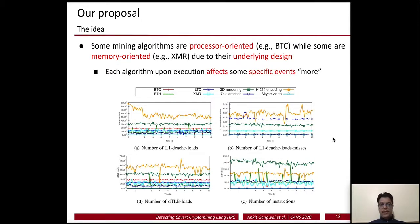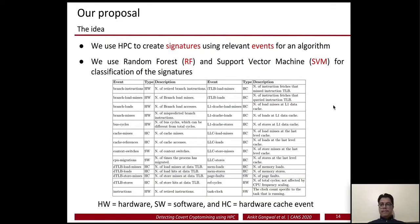When mining algorithms execute, they affect some hardware events more than others. For example, the XMR line is very consistent for L1 dcache load misses, but fluctuates a lot for number of instructions — meaning it affects the instruction count event more than L1 dcache load misses. We use HPC to create signatures using the relevant events for a given algorithm. In total we use 28 events, and then use Random Forest and Support Vector Machine for classifying these signatures.